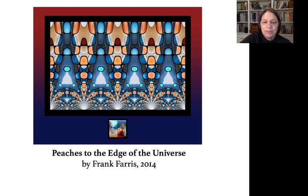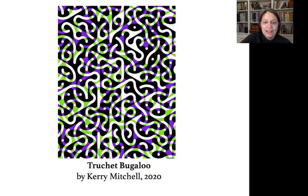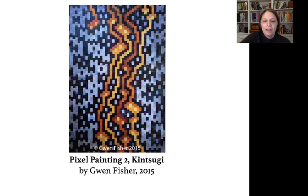Frank Ferris has developed a complete system of mathematics for creating images such as this using transformations of photographs in hyperbolic space. And this is a delightful portrayal of Truchet tiles by Carrie Mitchell. Truchet tiles are a simple system of tiles that can form a wealth of patterns. This painting by Gwen Fisher shows how a simple set of rules, called cellular automaton, can form complex and surprising patterns.